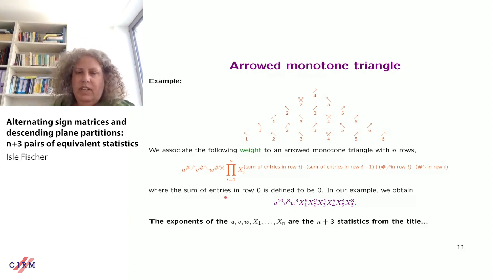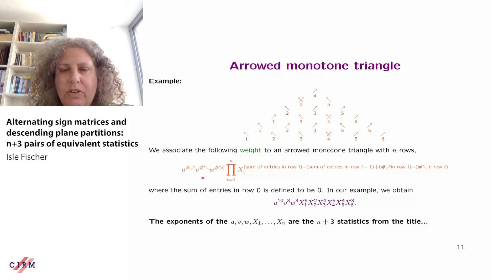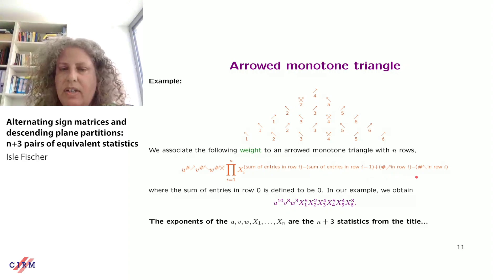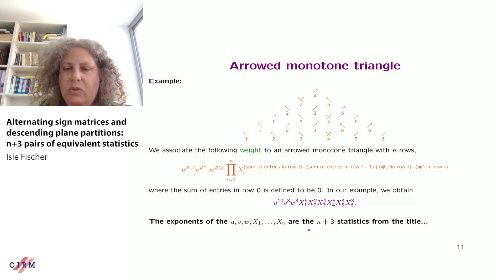These are the n+3 statistics from the title — the exponents of u, v, w, and x_1 through x_n in the weight monomial. There is an analogy with Schur polynomials: Gelfand-Zetlin patterns are basically monotone triangles without the strict increase along rows. Their generating function gives Schur polynomials, and arrowed monotone triangles are a natural variation where the arrows also play a role in the weight.